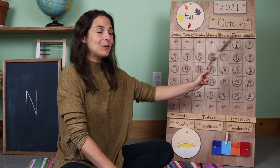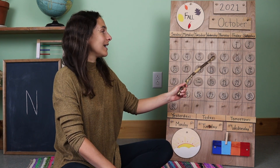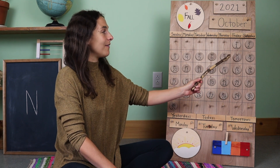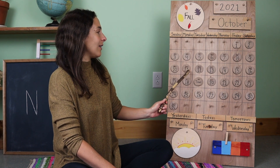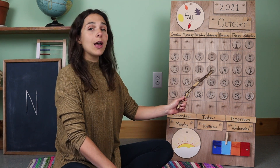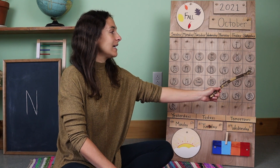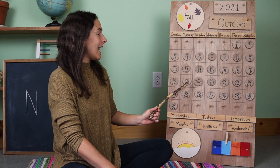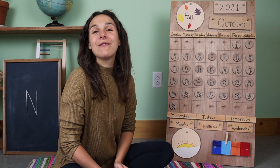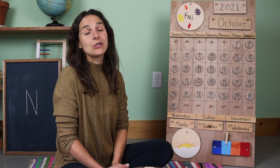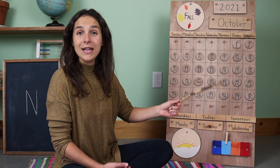One, two, three, four, five, six, seven, eight, nine, ten, eleven, twelve, thirteen, fourteen, fifteen, sixteen, seventeen, eighteen, nineteen. We've had 19 days so far in the month of October. The month is more than halfway over.